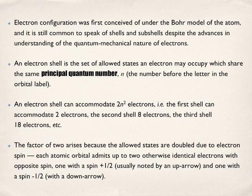So an electron shell is the set of allowed states an electron may occupy which share the same principal quantum number, and we use the letter n, the number before the letter in the orbital label. An electron shell can accommodate 2n² electrons. What we're looking at is that the first shell can accommodate two electrons, second shell can accommodate eight electrons, and now look at how many electrons on the third shell, eighteen electrons.